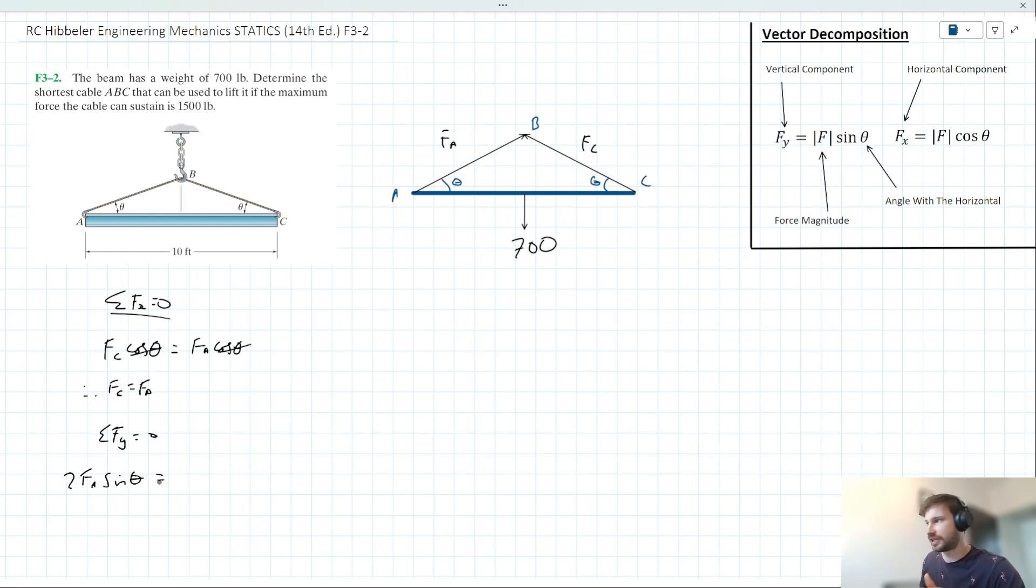So that's what's acting up, what's acting down. Well, we've got this 700 pound weight here, so we can say 2FA sin theta is equal to 700.